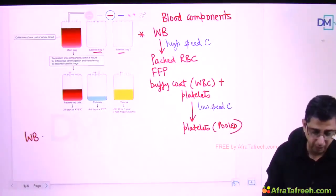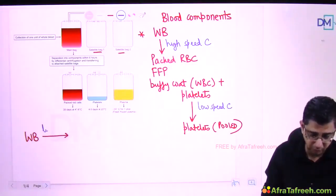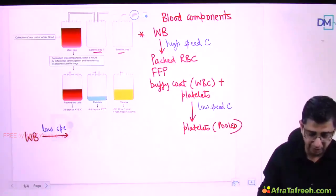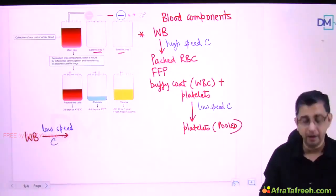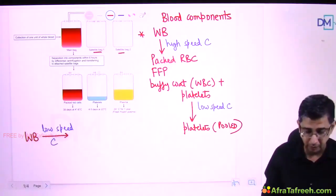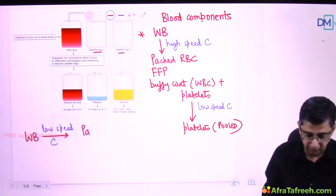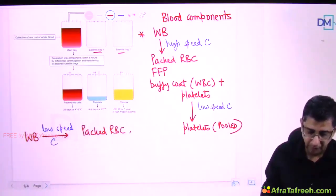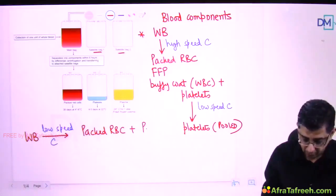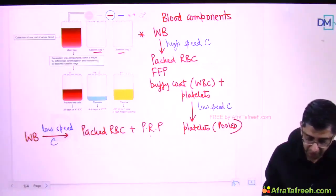Let us study another method which also produces blood components but in a different way. WB, whole blood, is initially subjected to a low speed centrifugation. Please note: in the earlier technique we subjected the sample to a high speed centrifugation - this time it is a low speed spin. This breaks the blood into two components: packed RBCs and platelet rich plasma, written as PRP. The PRP unit is then subjected to a high speed spin.